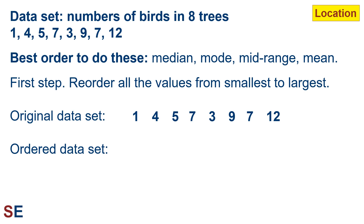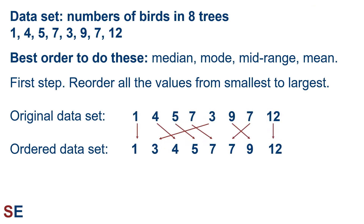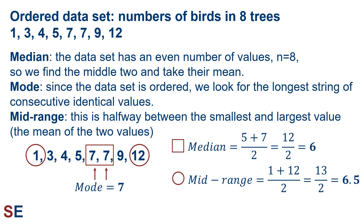The best order to calculate our location statistics will be the median, the mode, the mid-range, and then the mean. Our first step will be to reorder all the values from smallest to largest. Now that we have an ordered data set, we can calculate the median, mode, and mid-range quite easily. The median will be the value in the middle.